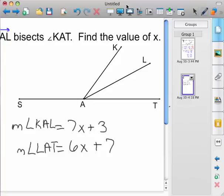Okay, so the first thing we need to do is understand what the words mean. AL bisecting angle KAT - this is AL right here. Bisect means it's a cutter. AL is going to cut angle KAT into two equal pieces. So there's my two equal pieces. Those angles are going to be the same, no matter what.